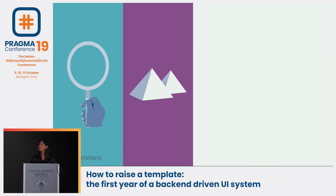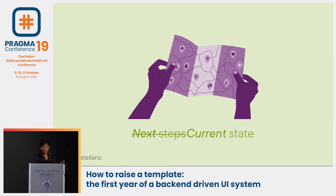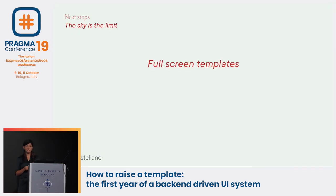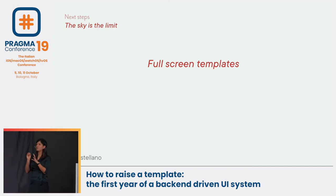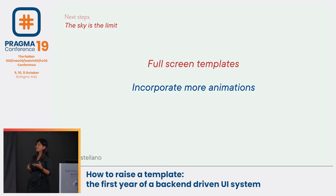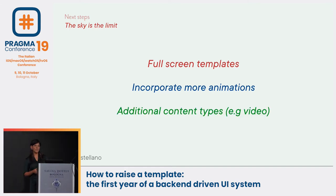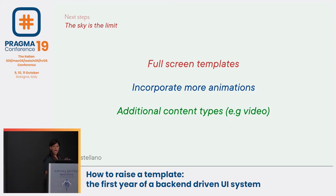Has this architecture lasted a year? Yes it did. Coming back to today — the last time I talked about this we had several steps we wanted to do, which have now transformed into our current state. First: full screen templates. Right now we have condensed cards — useful for tidbits — but if users want to read more, you need a full screen template. Second: we wanted to incorporate more animations, which as we saw earlier are engaging and attract users. Third: additional content types — first iteration was a locally stored image, second was server-fetched images, third would be video.